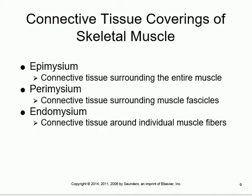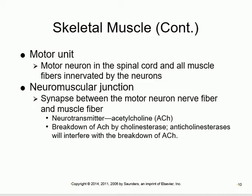The covering of the muscle from inside is the endomysium, in the middle is the perimysium, and outside is the epimysium. The neuromuscular junction is the junction between the nerve and the muscle. A motor unit is a motor neuron with all the muscle fibers it innervates. The neurotransmitter used at the neuromuscular junction is acetylcholine - this is important to remember.